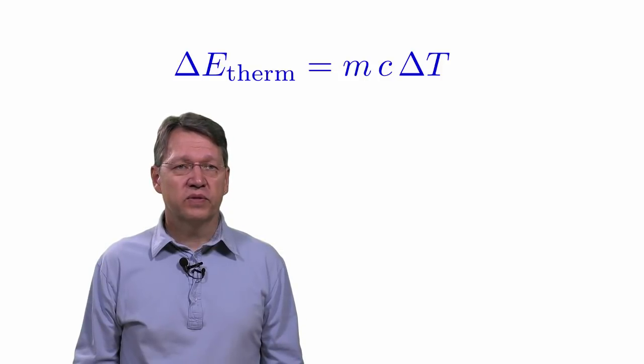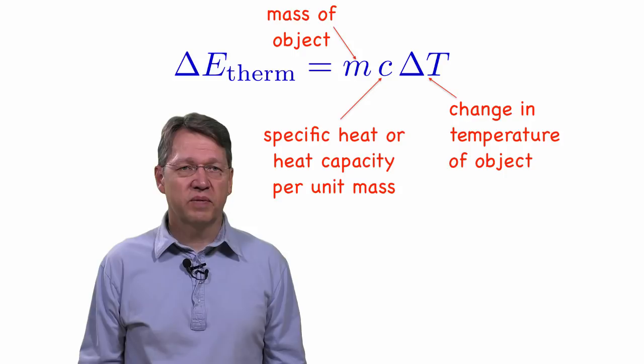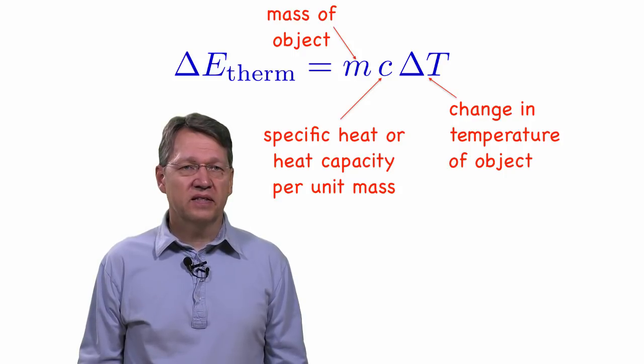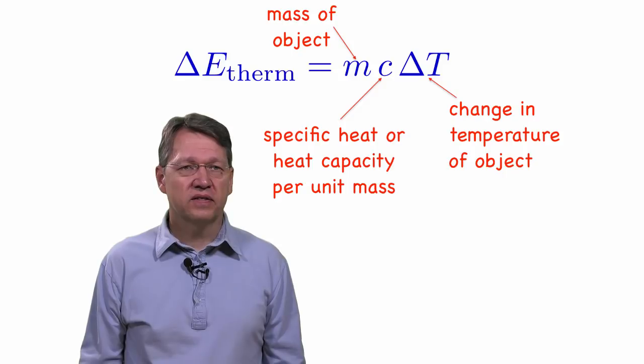The change in thermal energy is equal to the change in temperature times the heat capacity per unit mass times the mass. This makes sense since the more the temperature changes, the more the energy changes, and it takes more energy to heat up a larger mass. Each substance can have its own heat capacity since some things take less energy to heat up than others.